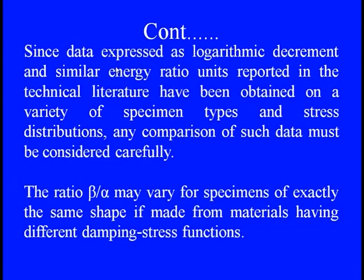Since the data expressed as the logarithmic decrement and similar energy ratios are just being varied in the same way with the same kind of specimen types and stress distribution, we need to see how the material is being chosen so that we can keep these ratios and logarithmic decrement in the similar fashion. The ratio β/α is absolutely one of the important parts, because it is just showing the dependence on the shape coming out from the feature and the material property with the damping stress function. That is why not only with the consideration of the specimen types and stress distribution, we need to see what exactly the damping stress functions are, meaning what exactly the interaction between the damping and the stress at the molecular level, so that we can simply choose the appropriate material for the damping feature.